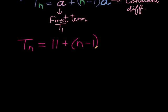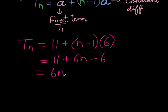Now you could, if you wanted to, just simplify that. So we have 11 plus 6n minus 6, or simply 6n, 11 minus 6 is plus 5.